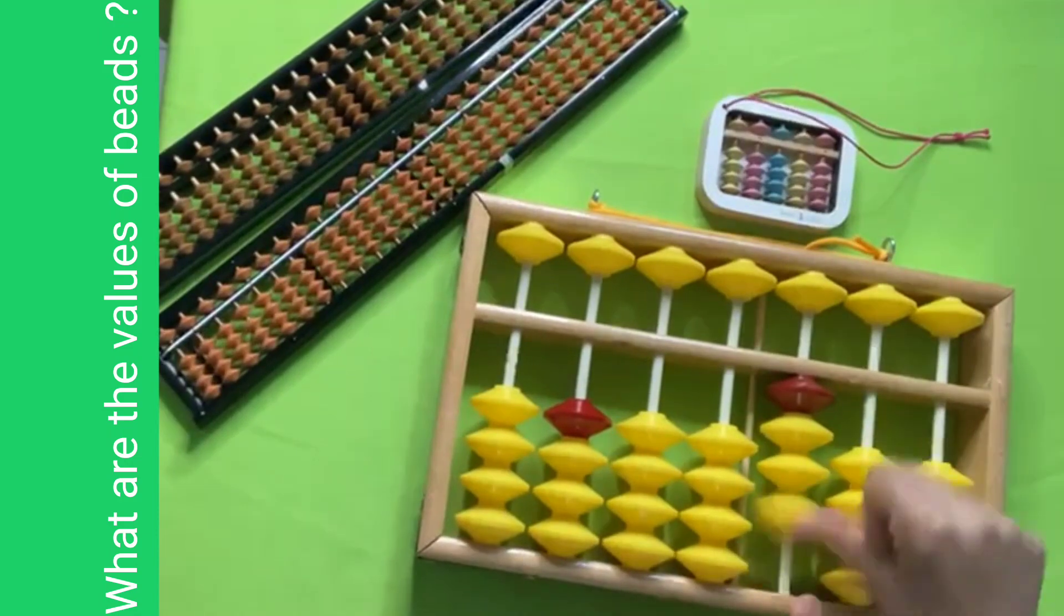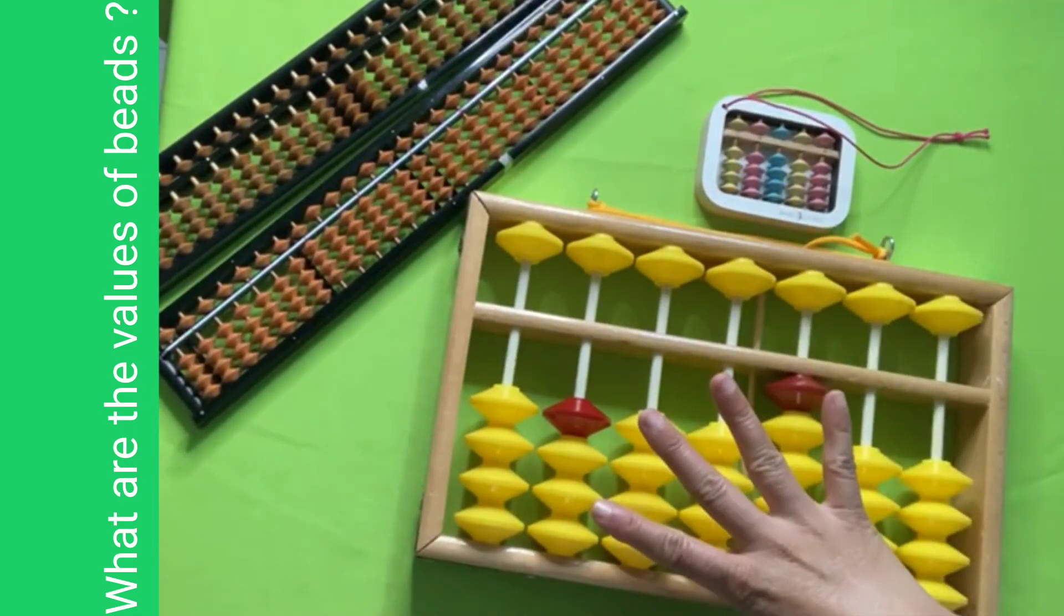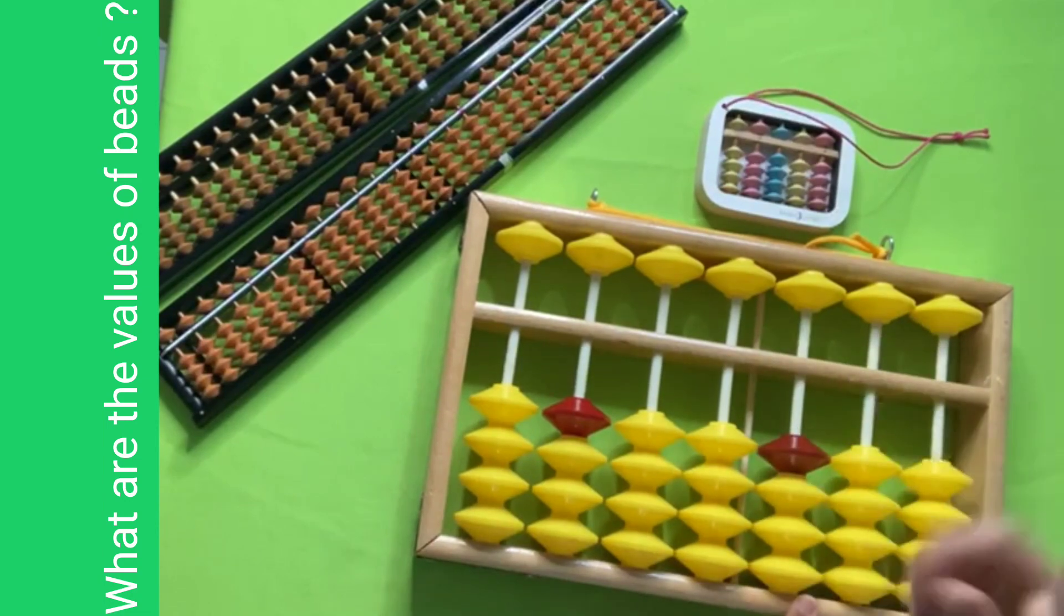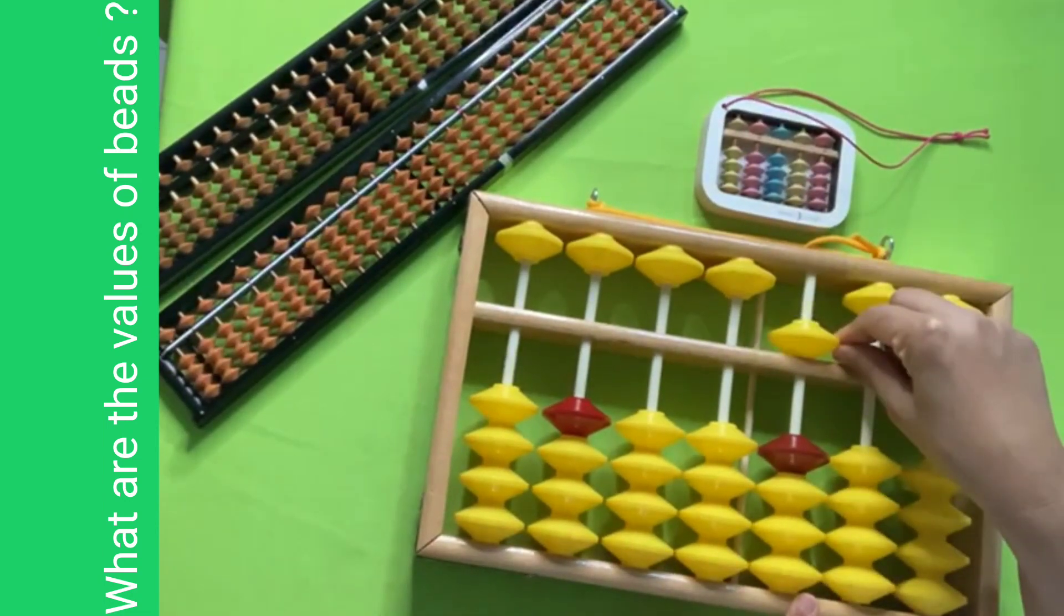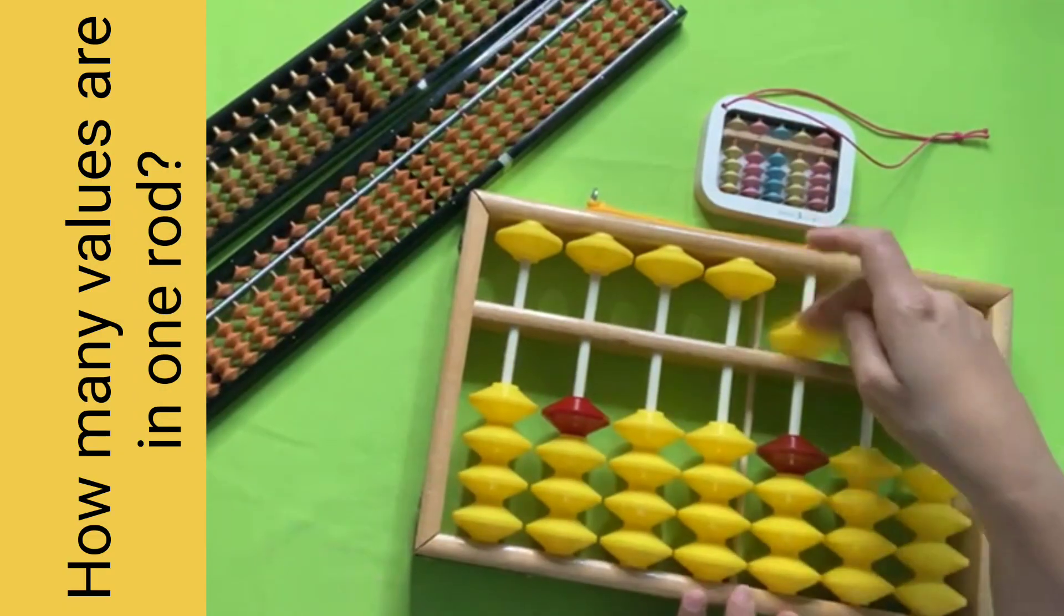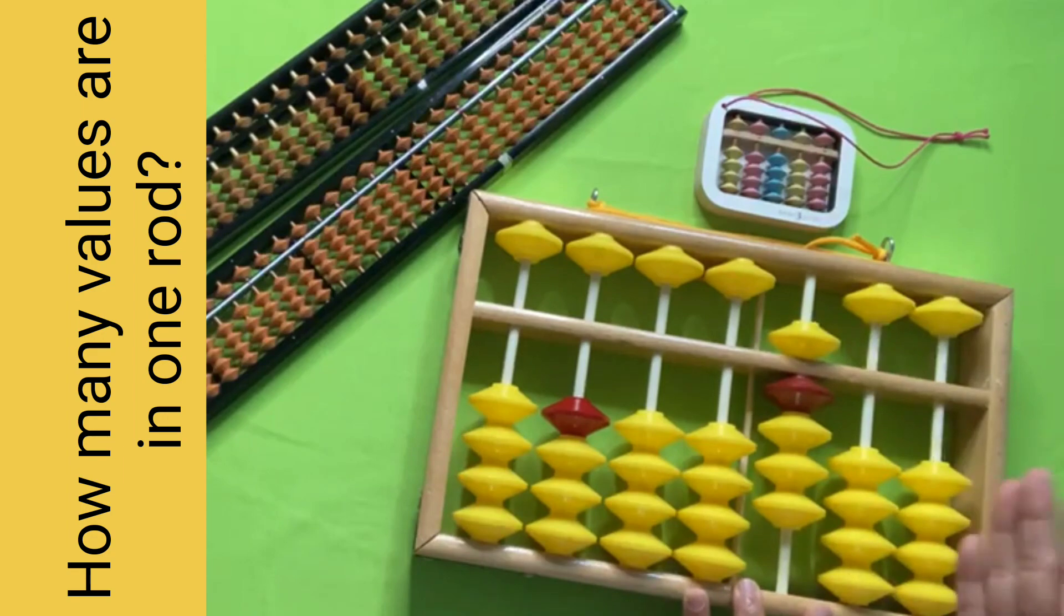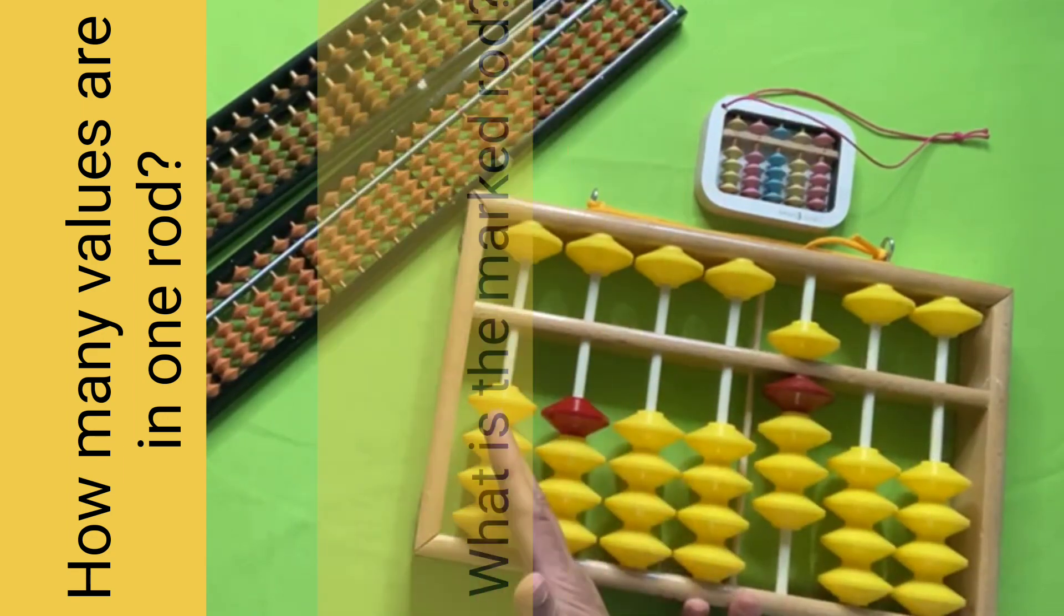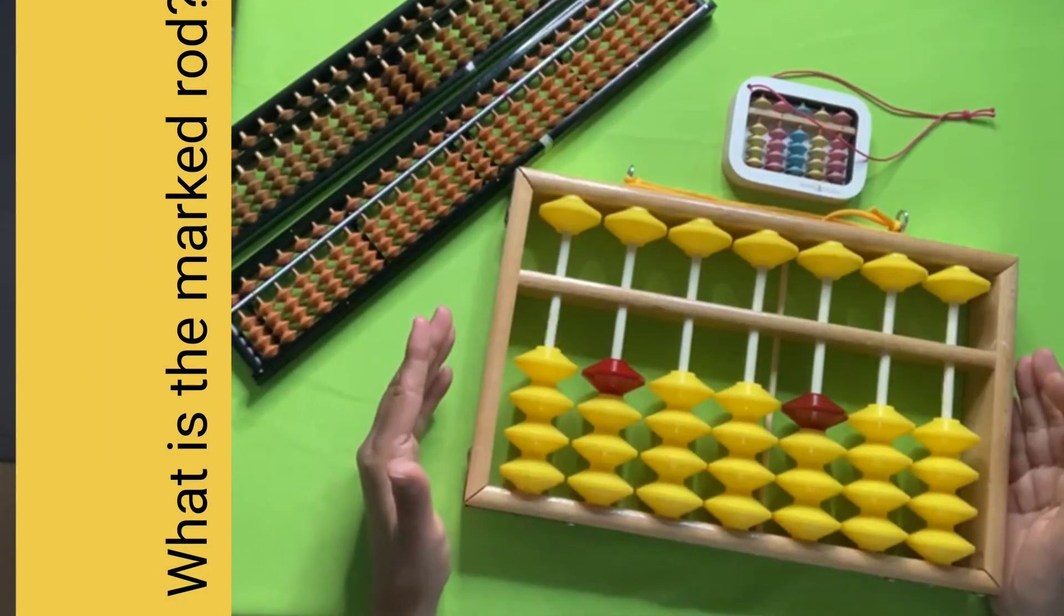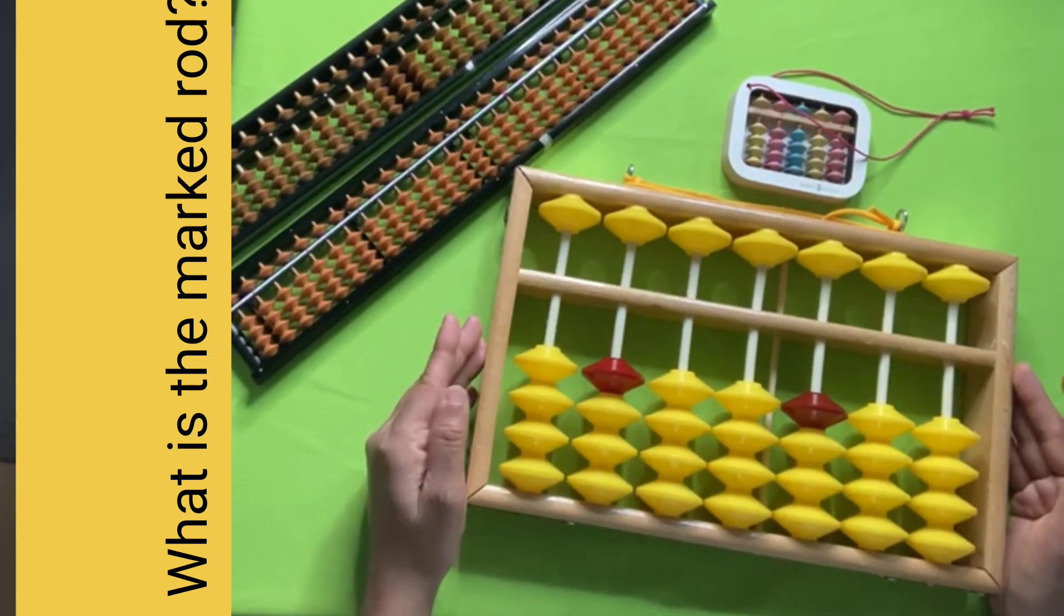Values of bits: four bits on the downside, and each bit contains one, one, one, one - four values all together. On the upside, only one bit and it contains five value. Five plus four equals nine in every rod.